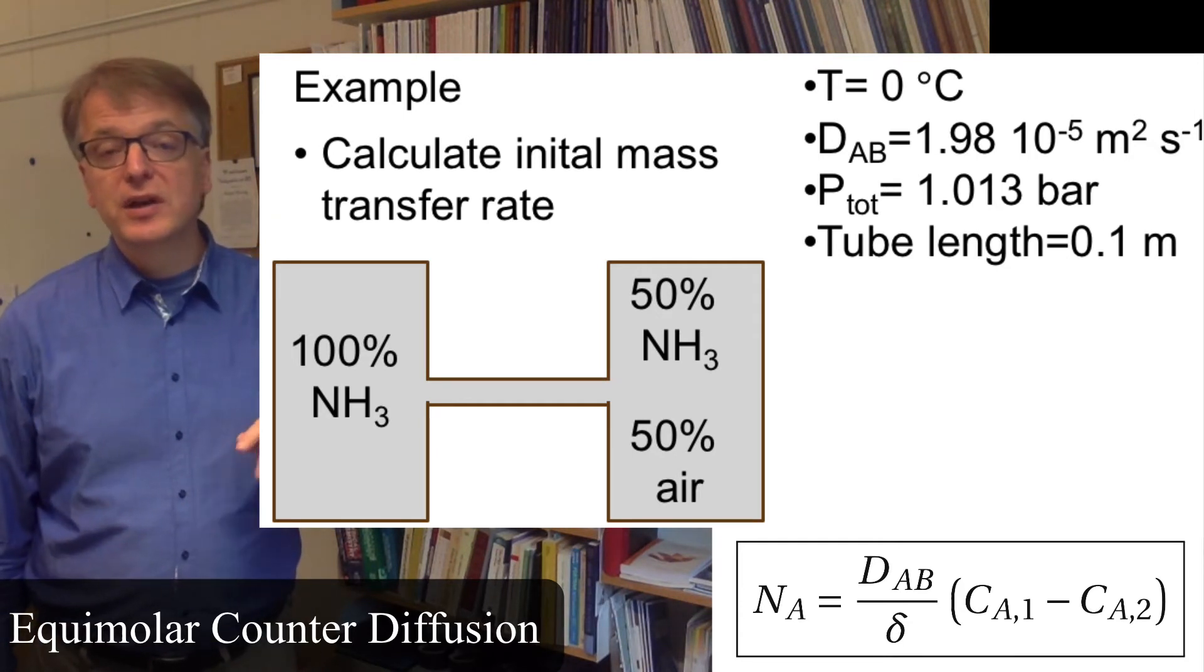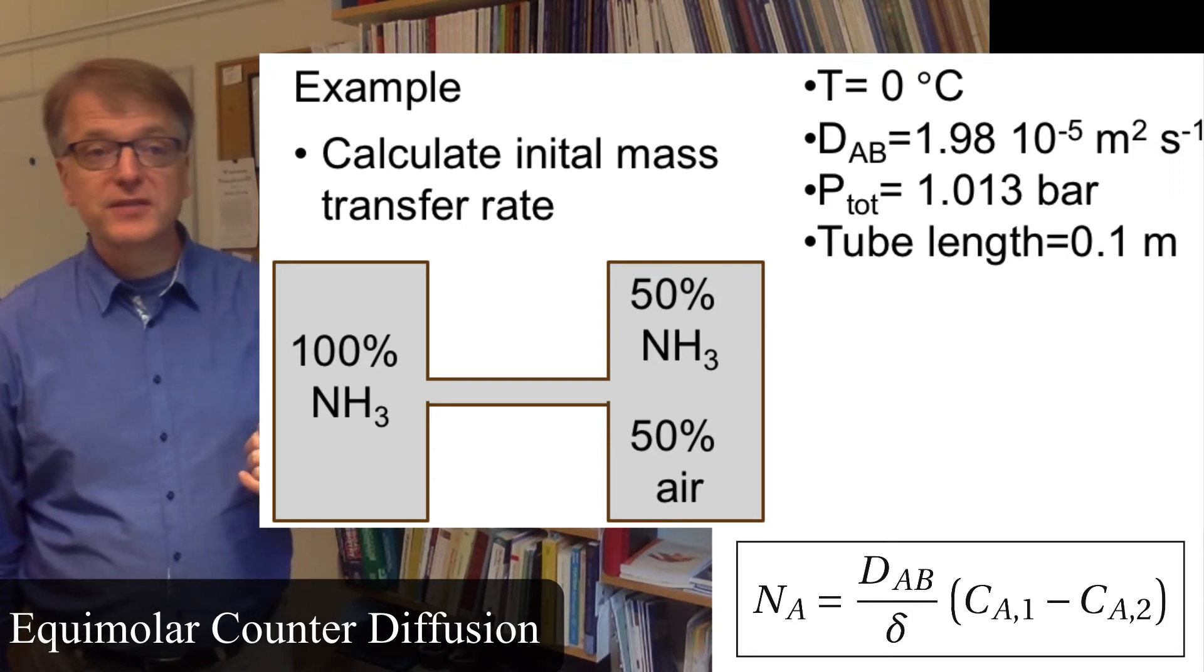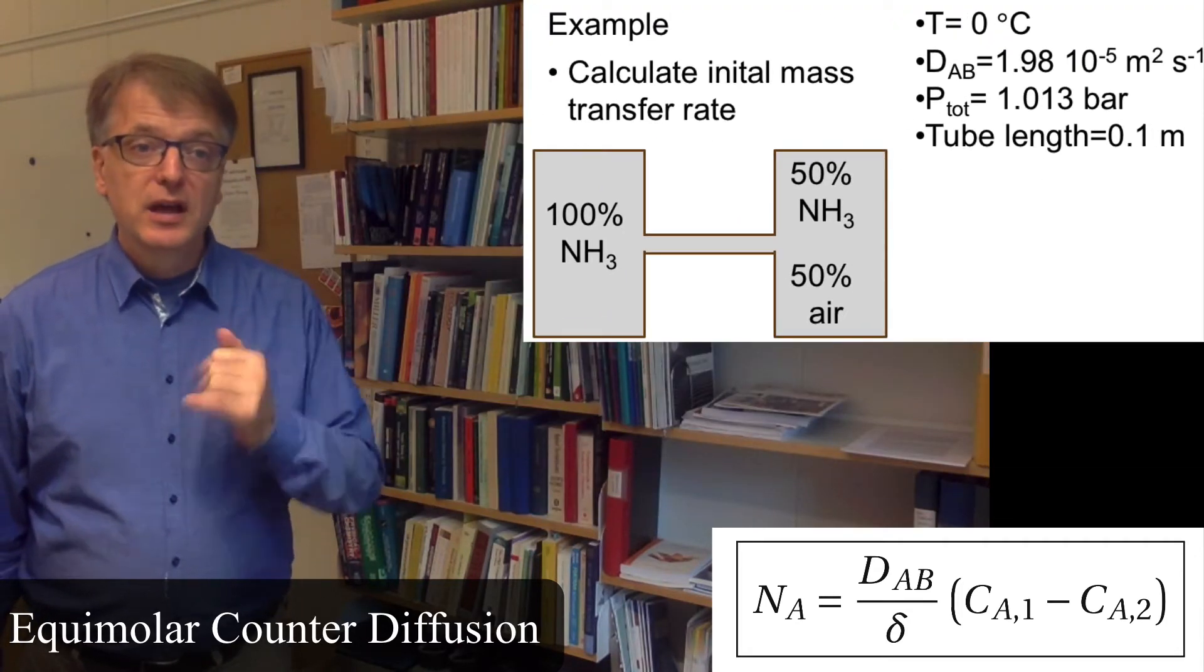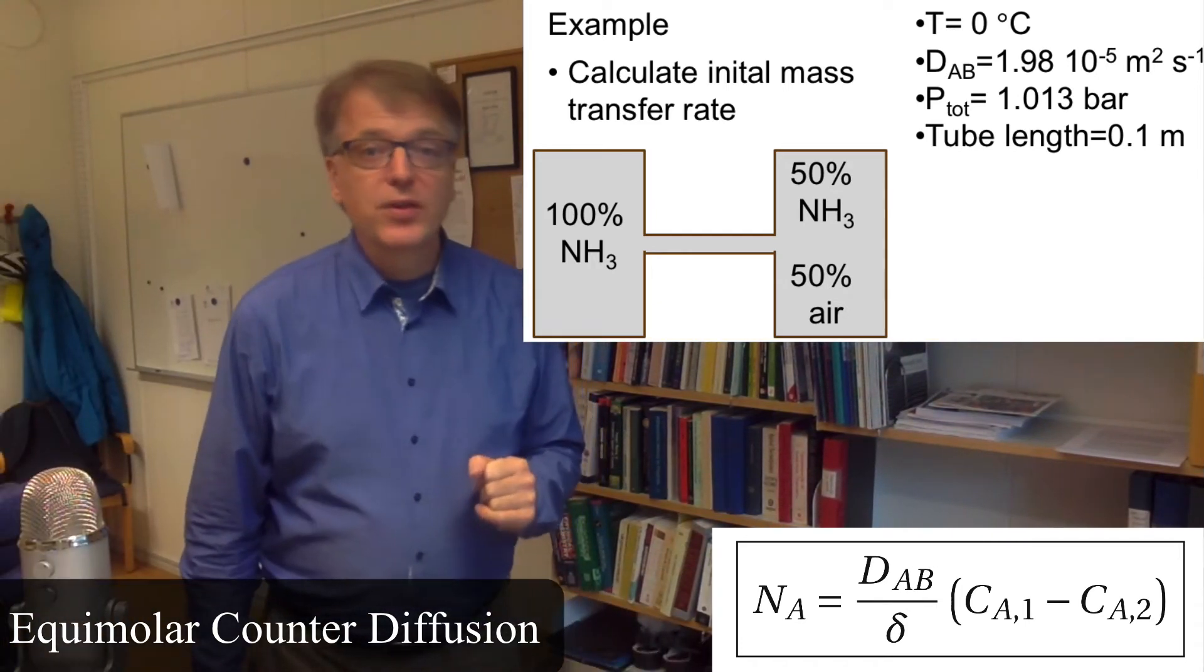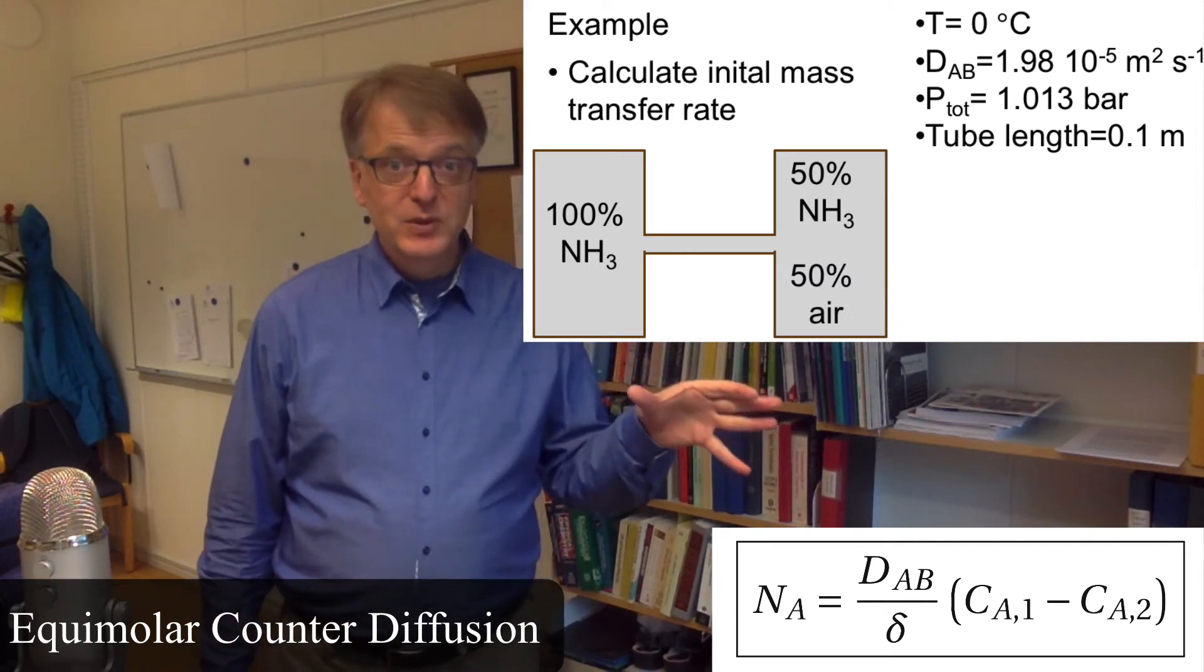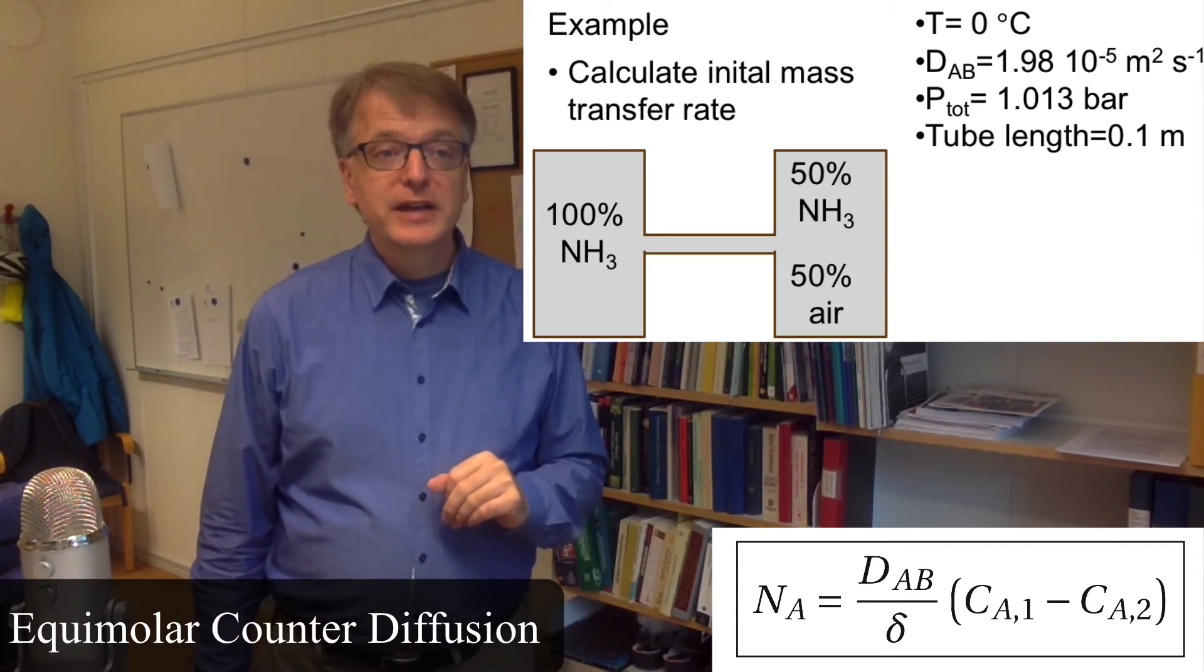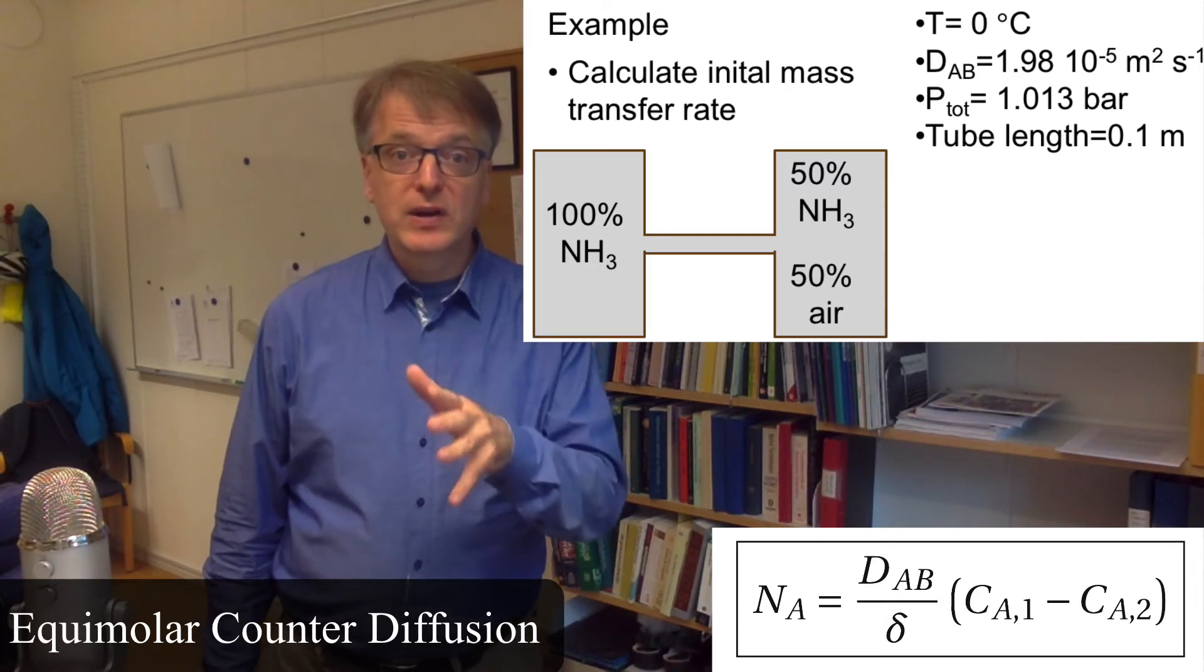You can assume that the pressure here is 1.013 bar and the tube length between the two is 0.1 meter. So pause here and try to calculate this yourself.